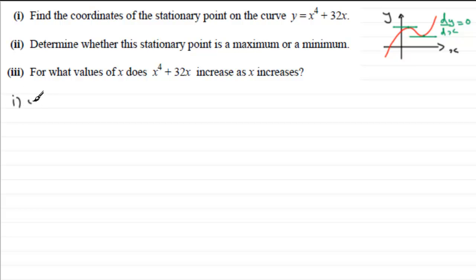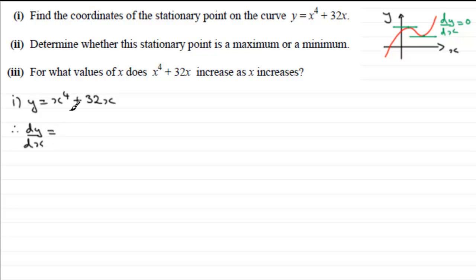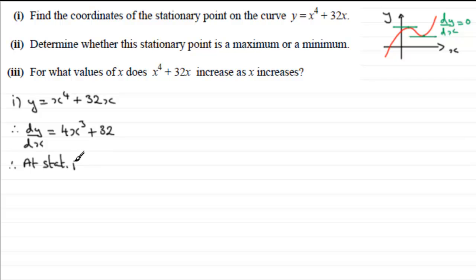Starting with y equals x to the power 4 plus 32x, if we differentiate with respect to x we get dy/dx equals 4x cubed plus 32. At stationary points, dy/dx equals zero.